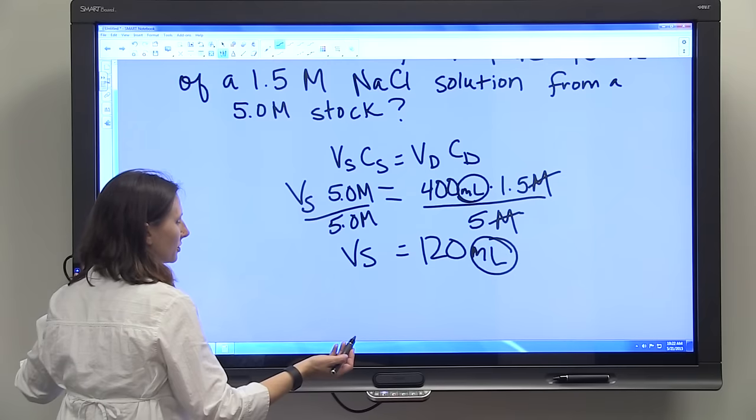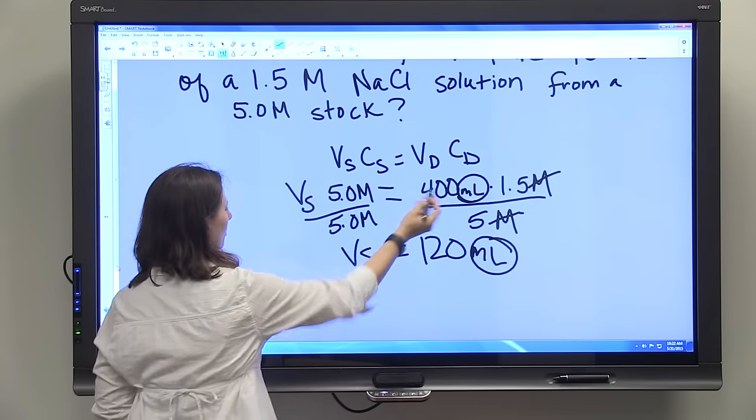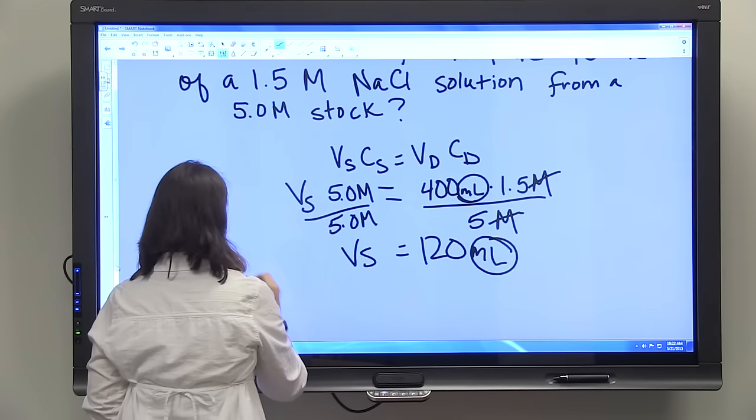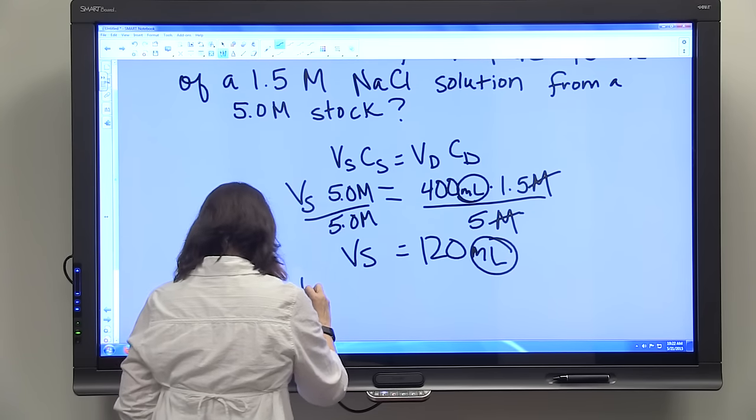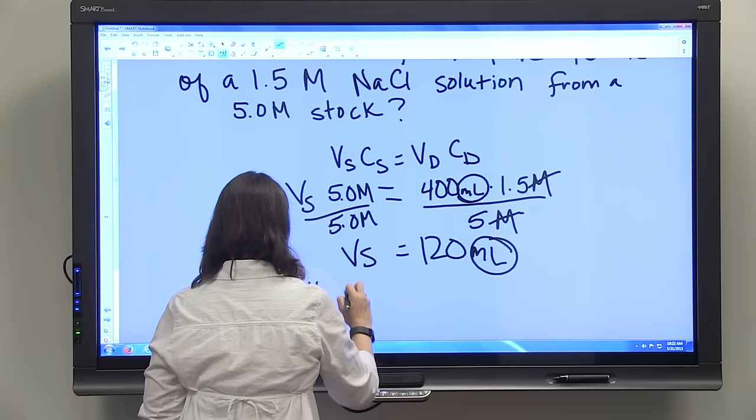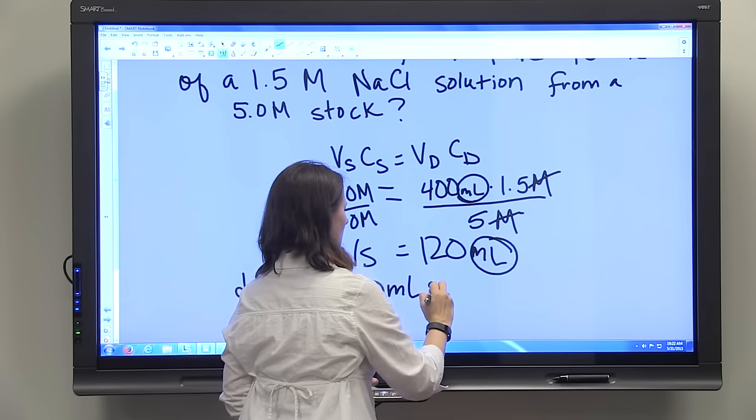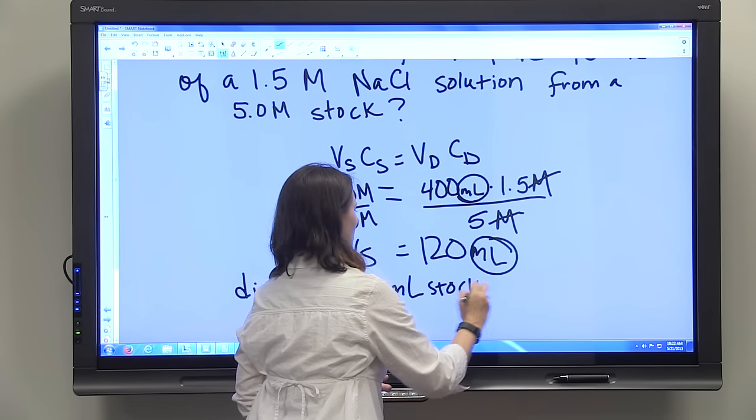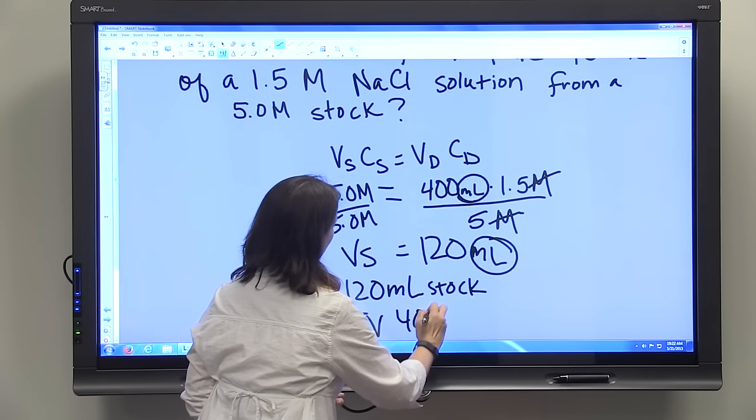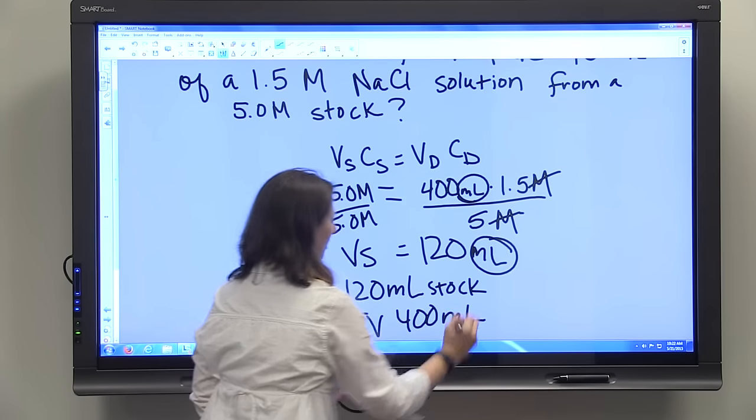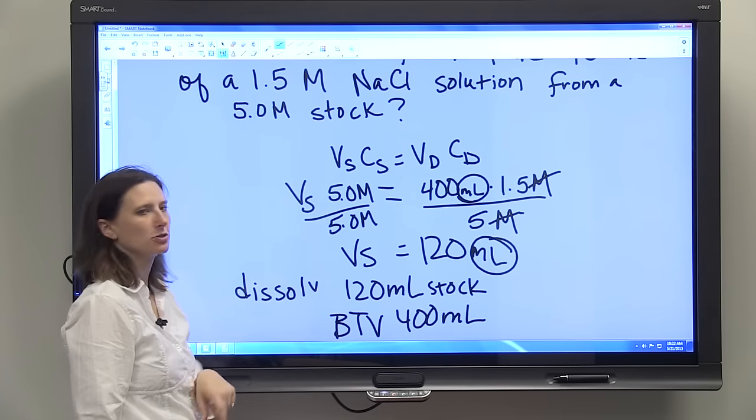That's not your final answer, of course, because you still have to tell us how to prepare the 400 mL. You're going to dissolve 120 mL of stock and bring to a final volume of 400 mL, and then you'll have your 400 mL of working strength solution.